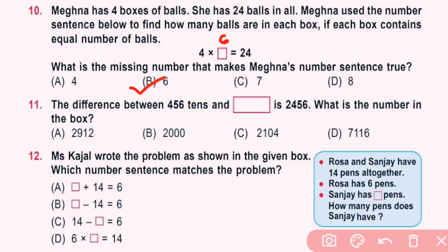Question number 11: The difference between 456 tens and dash is 2456. What is the number in the box? The difference between 456 tens means 4560 and dash. So we have to minus here 4560 minus 2456. So here 10, 10 minus 6 is 4. Here we take 5, 5 minus 5 is 0, 5 minus 4 is 1, and 4 minus 2 is 2. So answer is 2104. So C is correct answer.